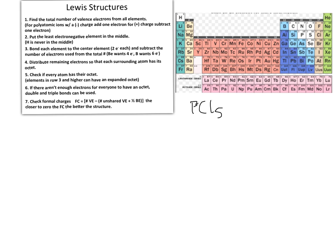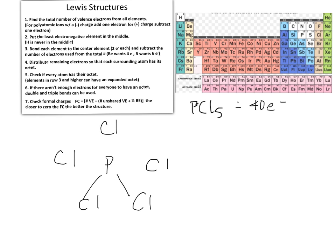Now let's look at another exception to the octet rule: the molecule PCl₅. Just as before, we calculate total valence electrons — which is 40 electrons. Following step 2, we place the least electronegative element, phosphorus, in the middle and surround it with the five chlorine atoms. We then bond each chlorine to the central atom, using 2, 4, 6, 8, 10 electrons — a total of 10. Subtracting those 10 leaves us with 30 electrons.